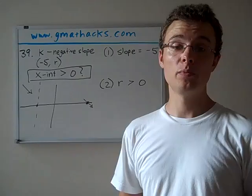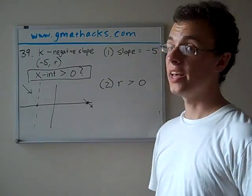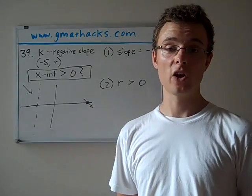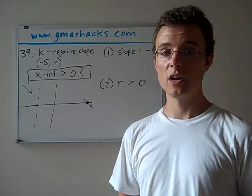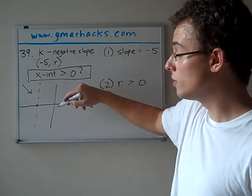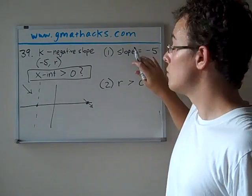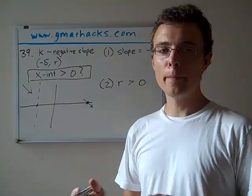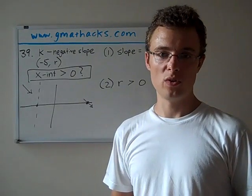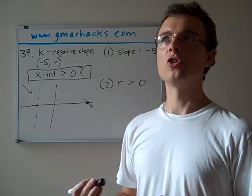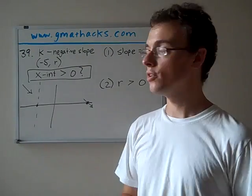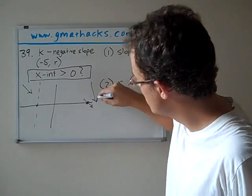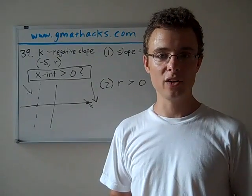So statement one, the slope is negative 5, the slope of line K. We already knew it was negative, but now we know it's negative 5. As I mentioned already, this is something I hope you gain an intuitive understanding of. A negative slope goes down as it moves to the right. Negative 5, that's something that will move down very sharply. This line right here, that's about a slope of minus 1, maybe a little less than minus 1, or a little greater I'm sorry, something like minus 3 quarters. A negative 5 slope is one that's moving downhill very sharply.